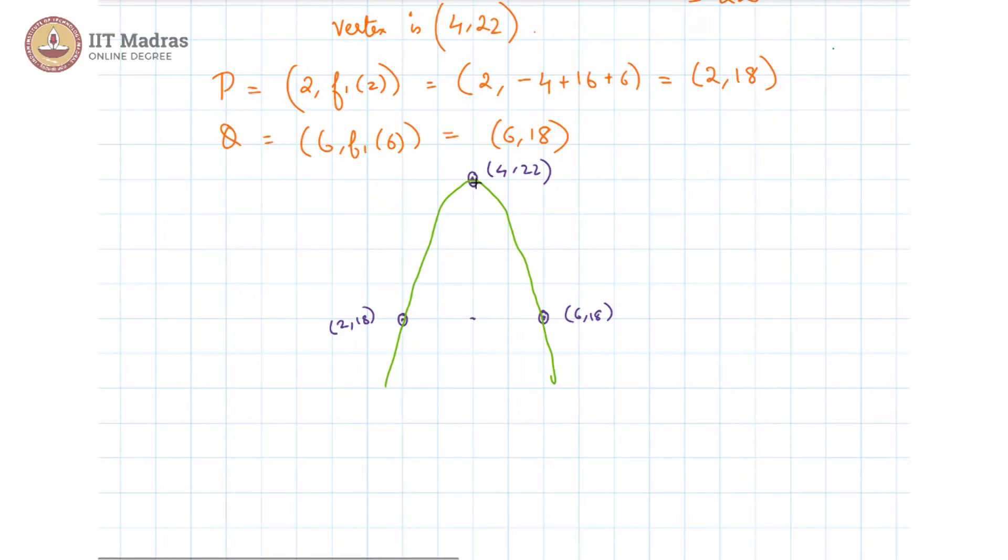And the triangle we are interested in is an isosceles triangle which looks roughly like this. This is a triangle that is being rotated 180 degrees about its axis of symmetry, and its axis of symmetry is x equals 4. Now I am erasing the parabola in order to focus on the triangle alone.